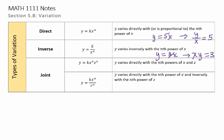Or, y equals k times x to the n over z to the n, where y varies directly with the nth power of x, but inversely with the nth power of z.